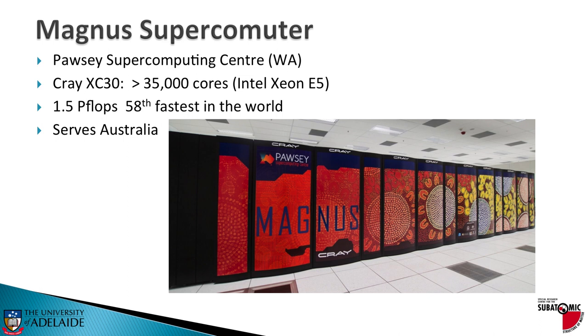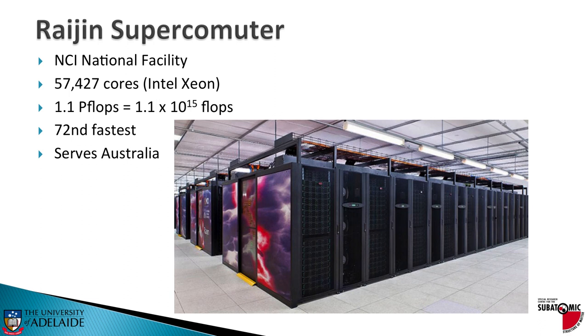Here's Riken. 72nd when it appeared. 1.1 petaflops, serving Australia. And recently, it was just upgraded. And so on the June 2017 list, we see it's now 70th in the list and serving 1.7 petaflops for Australia.